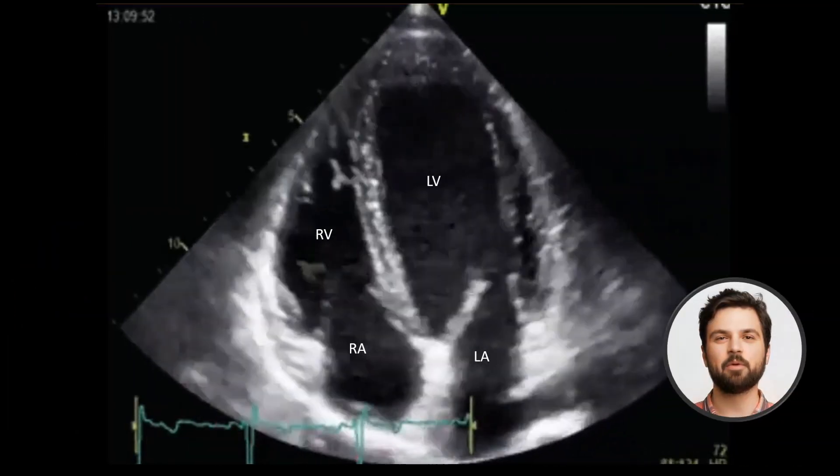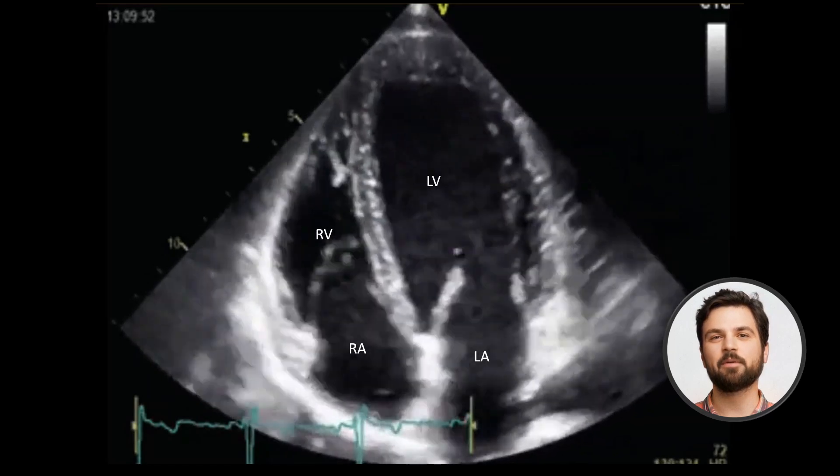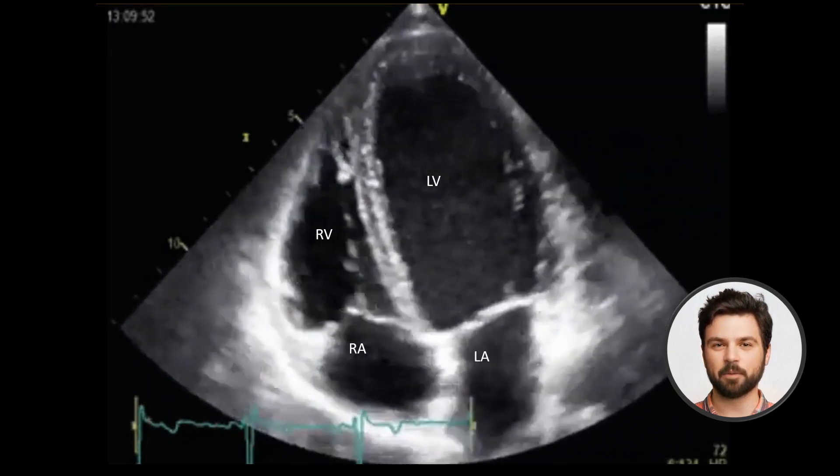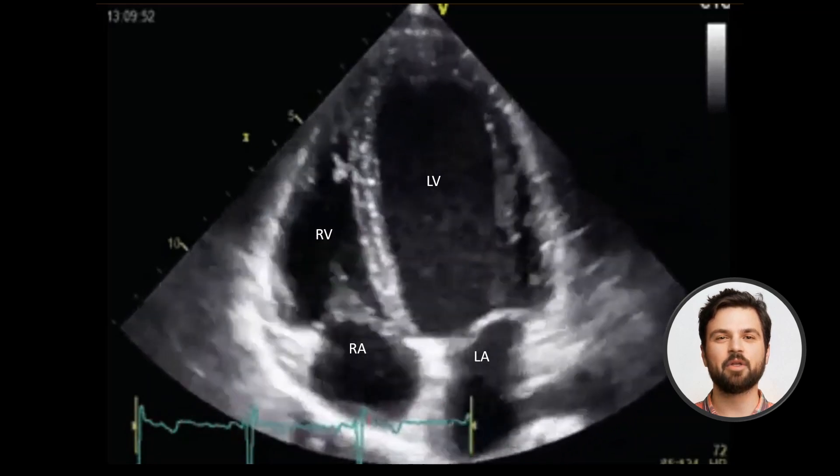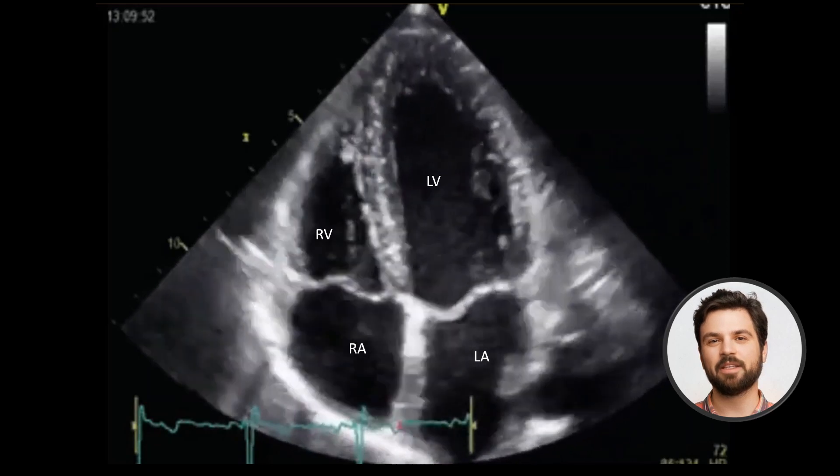The apical 4 chamber view is great to get an overview of cardiac structure and function. All 4 chambers are seen, along with the mitral and tricuspid valves. The anterolateral and inferoseptal left ventricular walls can be evaluated in this view.